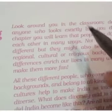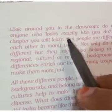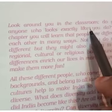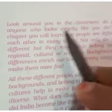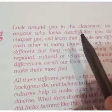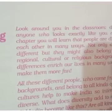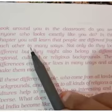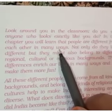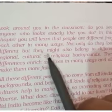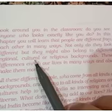Look around you in the classroom — do you see anyone who looks exactly like you? आपके आसपास अगर आप देखेंगे, classroom में क्या कोई भी एक ऐसा student है जो exactly आपकी तरह दिखता है? In this chapter you will learn that people are different from each other in many ways. Not only do they look different but they might also belong to different regional, cultural, or religious backgrounds.